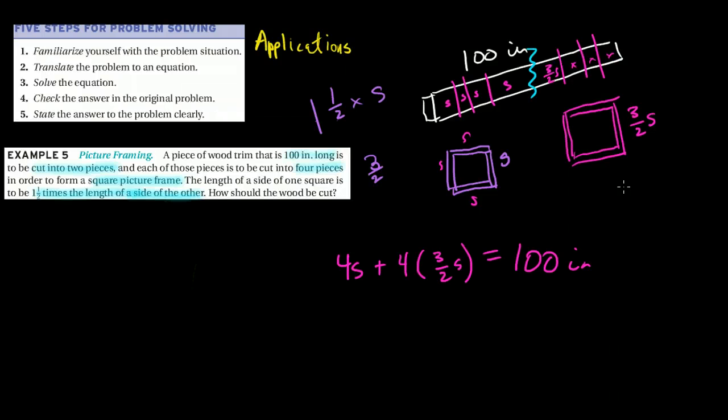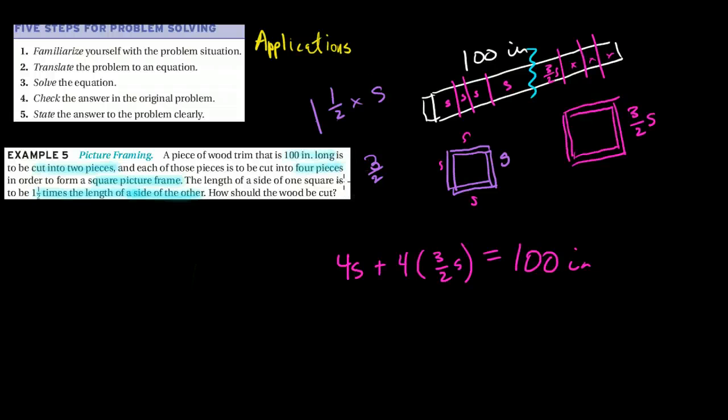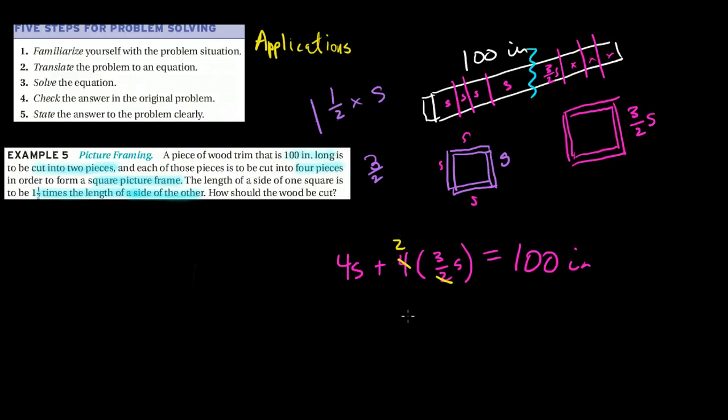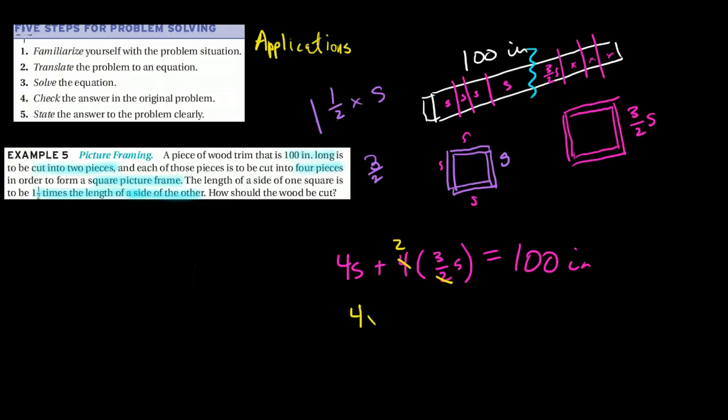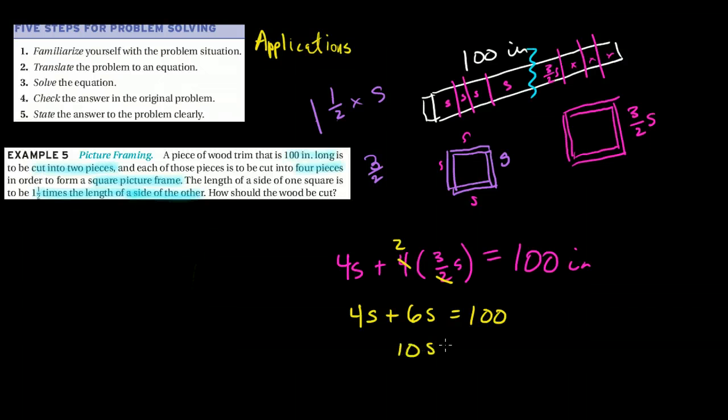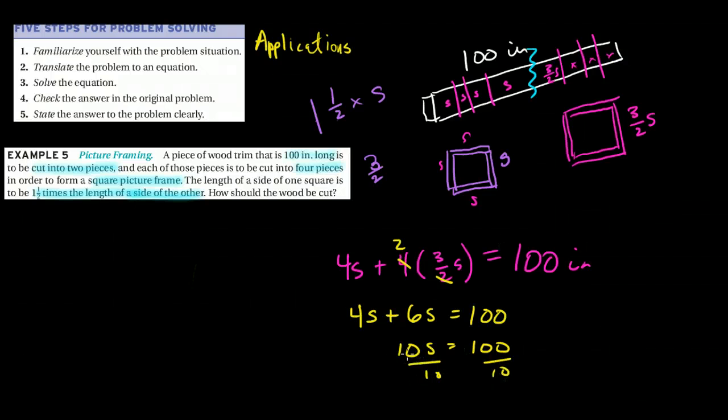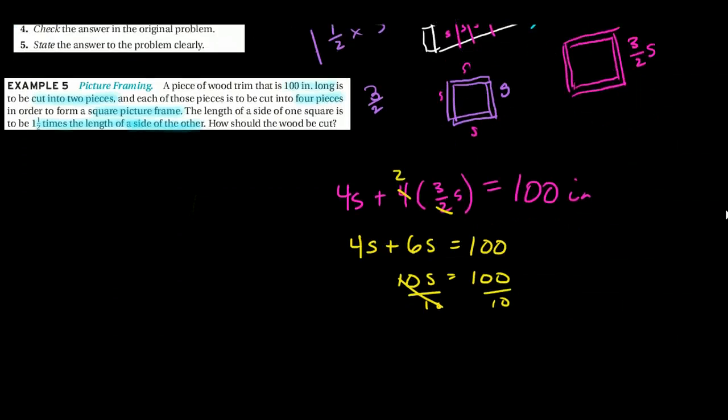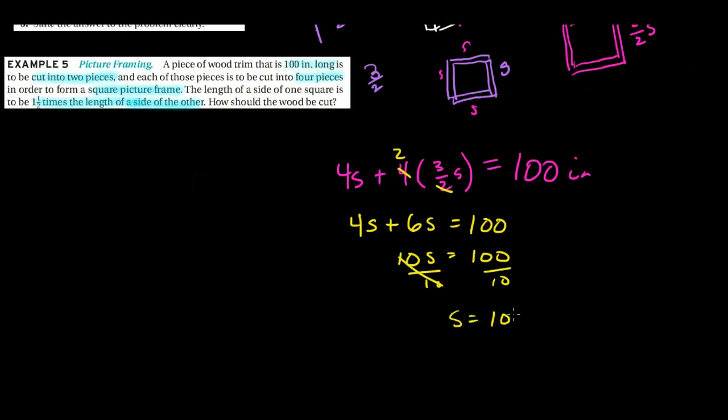So now all I need to do is solve. Shouldn't be terribly hard. If I were to simplify what I've got here so far, those cancel to two. So I've got four s plus two times three is six s equals 100 inches, or 10s is equal to 100 inches. So the square, the smaller square, is going to be s is equal to 10 inches.